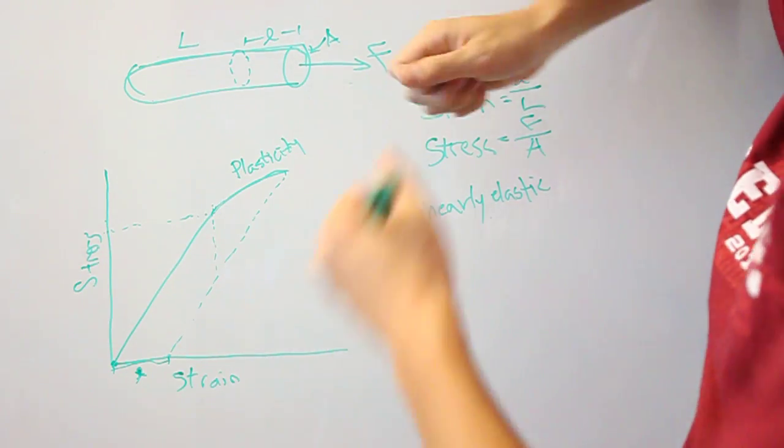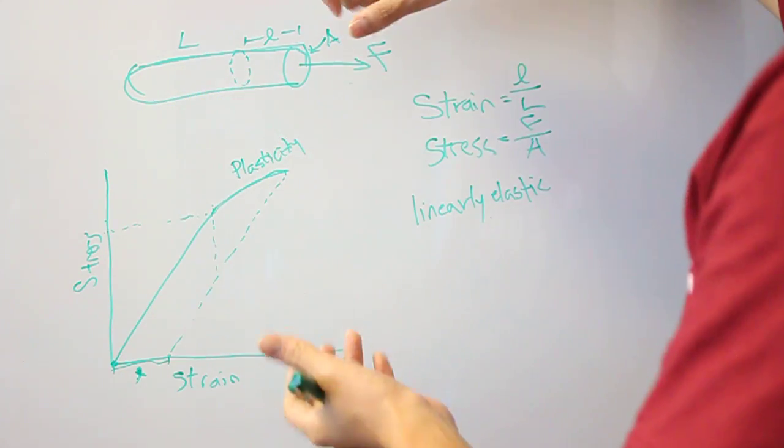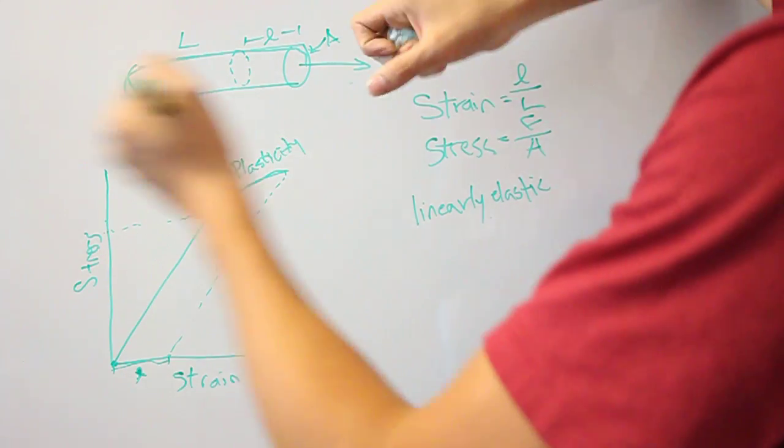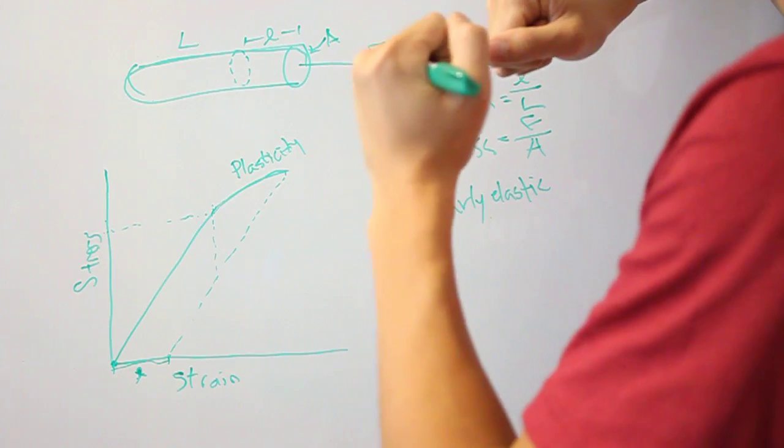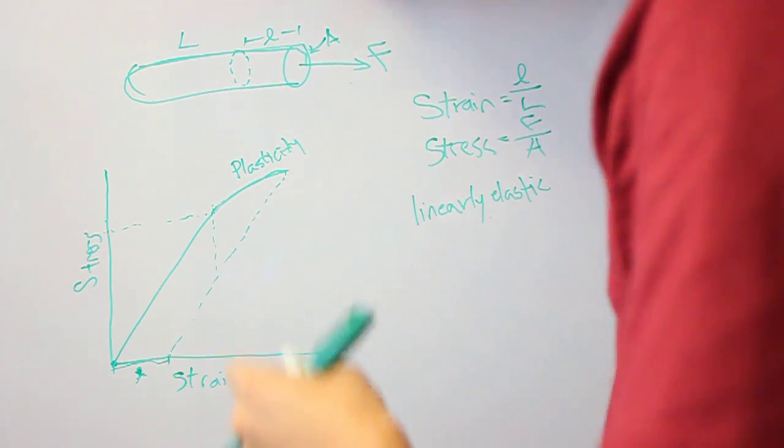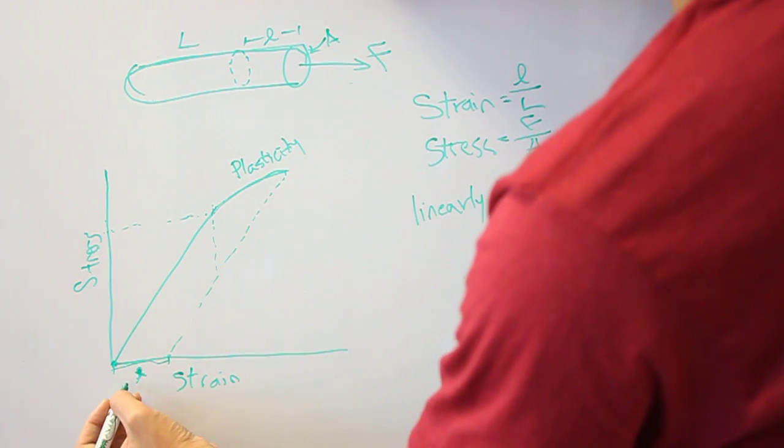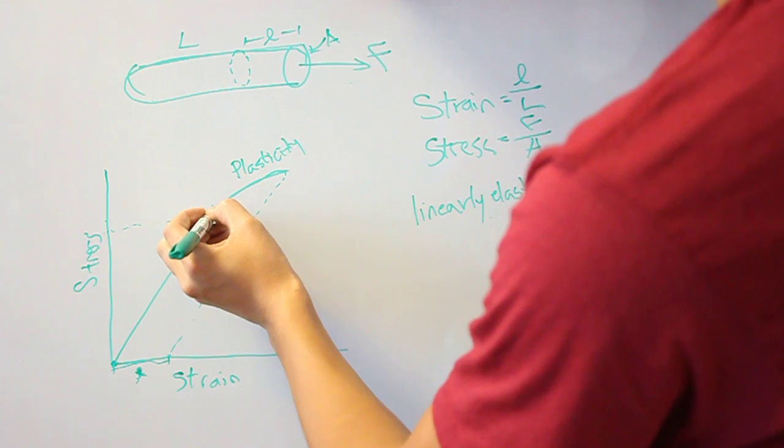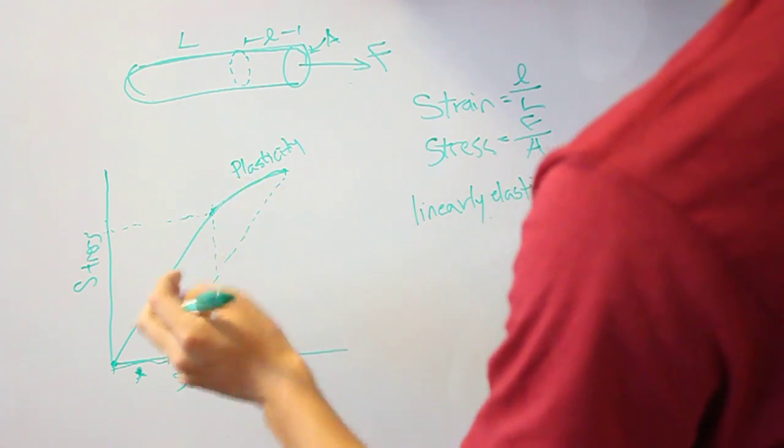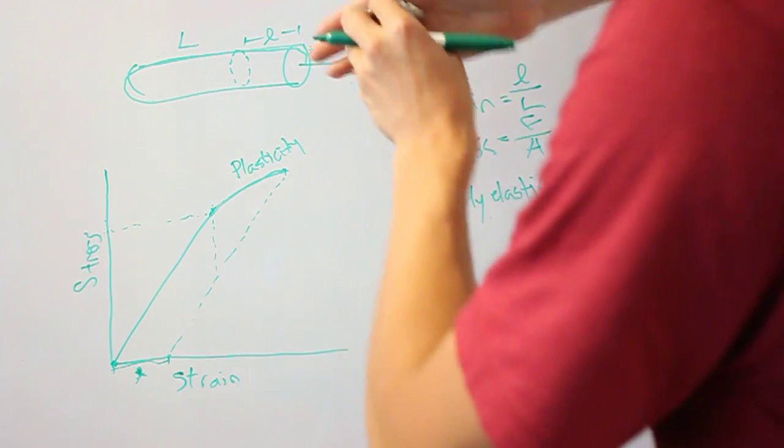So think of like a slinky that you've stretched way too often, and at some point, it's really saggy and long, and it never gets back to its really compressed, springy, original, right off the shelf material behavior. So this is plastic deformation of a material, that once you've gone past this point, then you've permanently deformed your material.